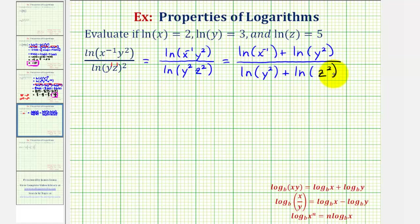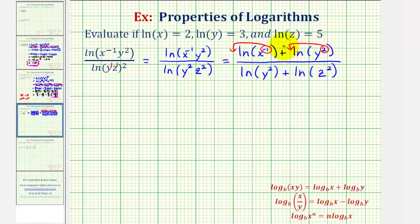Now we are going to apply the power property of logarithms, which means we can take the exponent n and write it as n times the logarithm. So we can move the exponent of negative one to the front, move the exponent of two to the front of the logarithm, and here, and here as well.